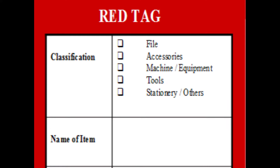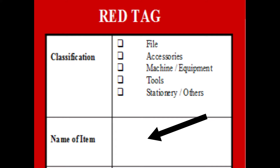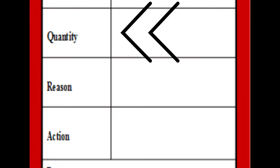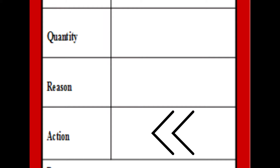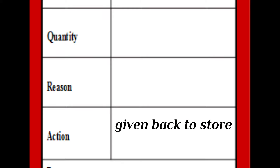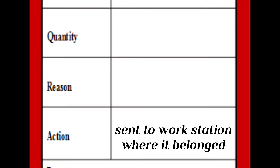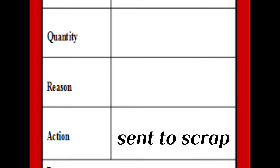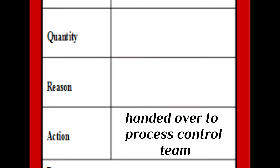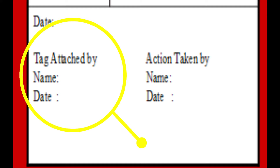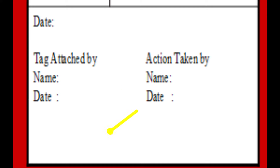You don't have to throw them out of the factory or make somebody else's workstation a mess. What you are supposed to do is use the red tag method. This is the red tag you will use for unwanted items to remove from your production area. The first portion is classification — whether it's a file, machine, tool, or stationery — then the name of the item, the quantity, the reason for removing it, and what action is to be taken: given back to the store, sent to the right workstation, scrapped, or handed back to process and production control.